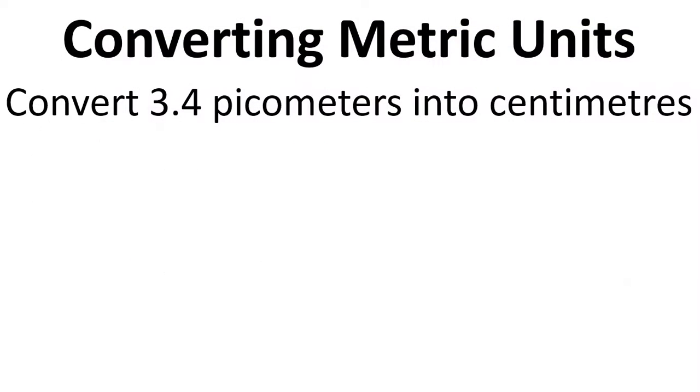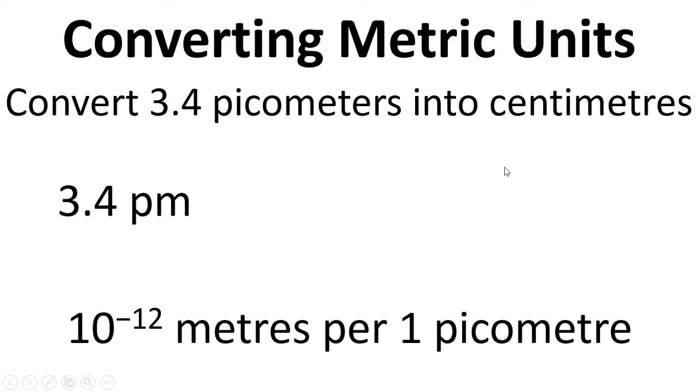So we can use these for examples. Converting distances is the example that's given here. So we need to convert 3.4 picometres into centimetres. So we start with our 3.4 picometres, and we know that there are 10 to the minus 12 metres for every picometre.